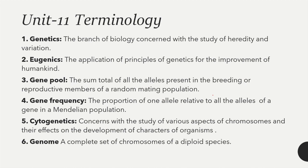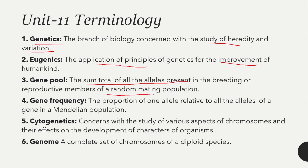The last unit is terminology. Genetics is a branch of biology concerned with the study of heredity and variation. Eugenics is the application of principles of genetics for the improvement of humankind. Gene pool is the sum total of all the alleles present in the breeding or reproductive members of a random mating population. Gene frequency is the proportion of alleles relative to all alleles of a gene in the Mendelian population.